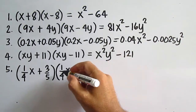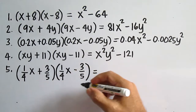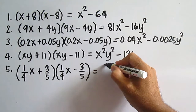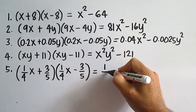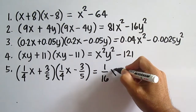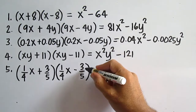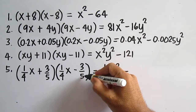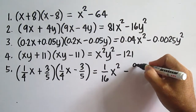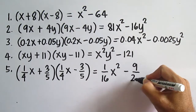Number five: 1 times 1 is 1, 4 times 4 is 16, and x times x is x squared, giving one-sixteenth x squared, minus 3 times 3 is 9, 5 times 5 is 25, giving 9 over 25.